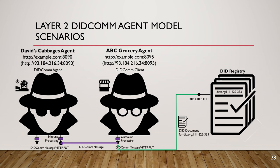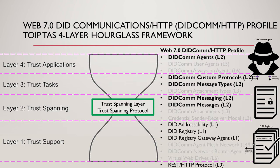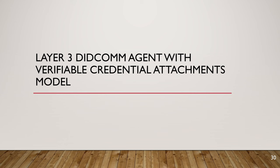Mapping layer two to the TOIPE Hourglass: we're adding DIDCOM messaging and DIDCOM agents. Previously we were just dealing with REST and DID addressability from layers zero and one. What's incremental in layer two is DIDCOM messaging, DIDCOM messages, and custom DIDCOM message types — all at layer two — plus the introduction of the DIDCOM agent, which is a layer four construct in the framework.